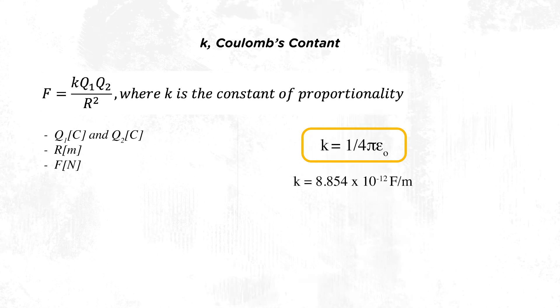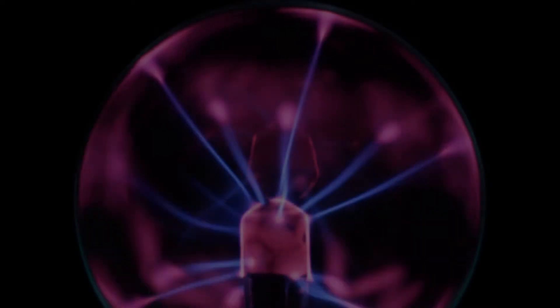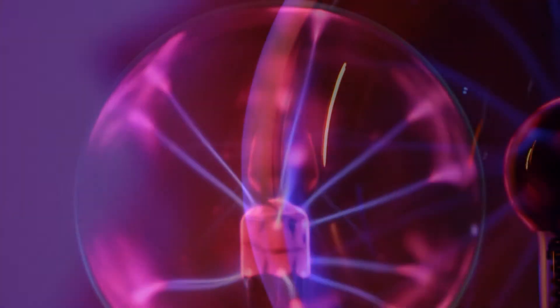Epsilon naught is the permittivity of free space, giving us 8.85 times 10 to the power minus 12 farads per meter. Permittivity is defined as the degree to which a dielectric can be polarized. A material with high permittivity polarizes more in response to an applied electric field than a material with low permittivity, thereby storing more energy. In simple terms, it is how much a given dielectric permits an electric field to pass through. There are several types of dielectrics, meaning point charges can exist in several mediums such as water and air. To apply Coulomb's law to such cases, we simply replace the permittivity of free space — which is also the permittivity of vacuum — with the permittivity of water or air.